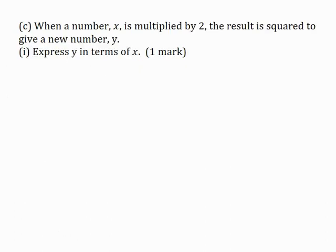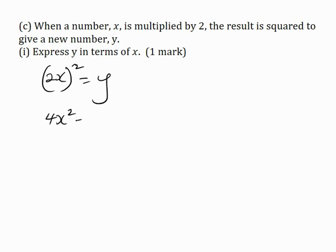Part C: When a number x is multiplied by 2, the result is squared to give a new number y. Part 1: Express x plus y in terms of x for one mark. The number x is multiplied by 2, giving 2x, and then it is squared to give y. So 2x all squared is 4x squared, which equals y. Switching this equation around: y is equal to 4x squared.